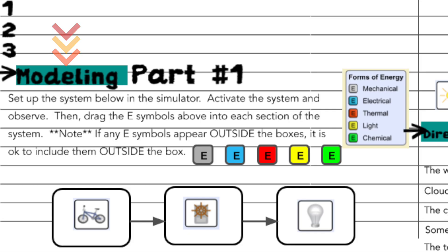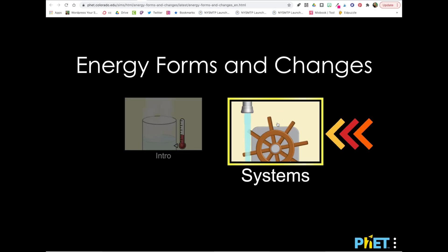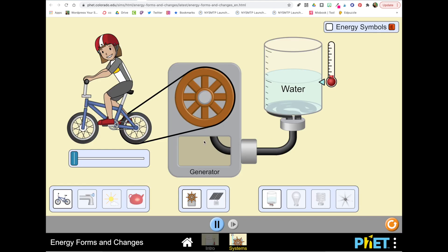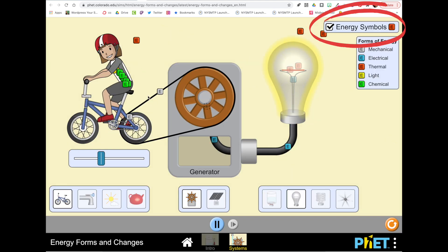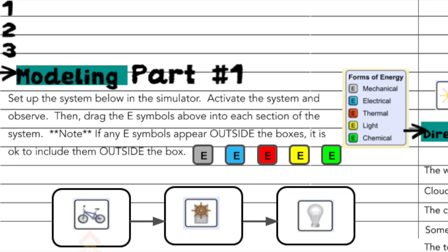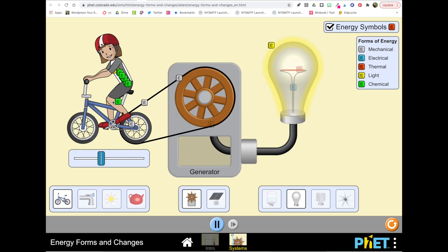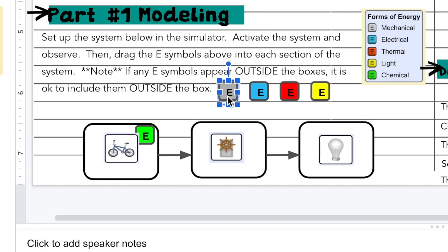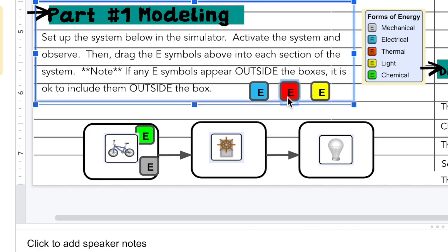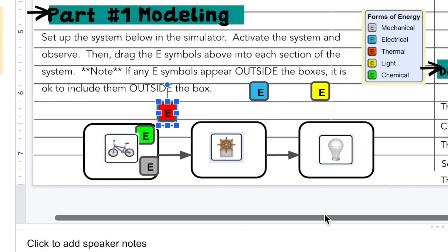We're now going to move on to the modeling section in your notebook. Here we're going to set the simulator up as you see below with a bicycle, the generator, and the light bulb. So to do that, click the simulator link and then click systems. Again, make sure you have energy symbols selected. In our notebook it shows us that we're doing a system with a bicycle, a generator, and an incandescent light bulb. So you want to make those selections in the simulator and then observe what happens to the energy in this system and then drag and drop the E's into this diagram or model of the system to reflect what you're observing.